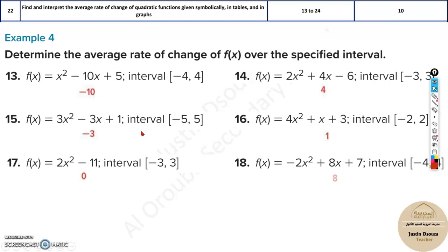I'll tell you another way to check the answer. When the intervals are symmetric, like minus 4 to 4 or minus 3 to 3, and it's a quadratic function, the average will be the middle term, that is the b value. The b value here is minus 10, so that's the answer. Here it's 4, there it's 1, here it's 8. There's no x value, that means 0, or minus 3.